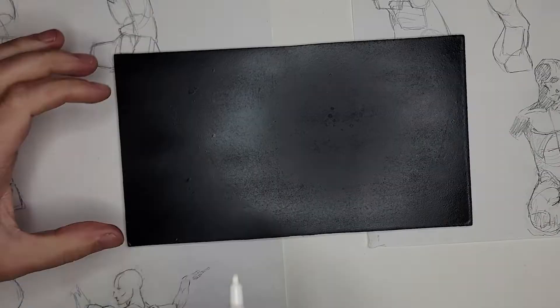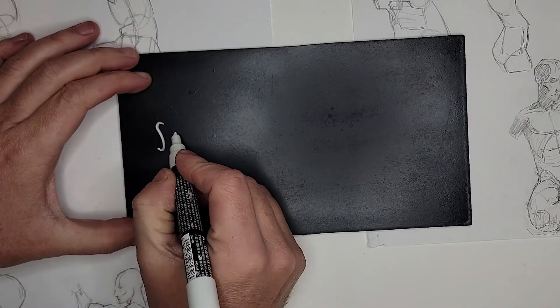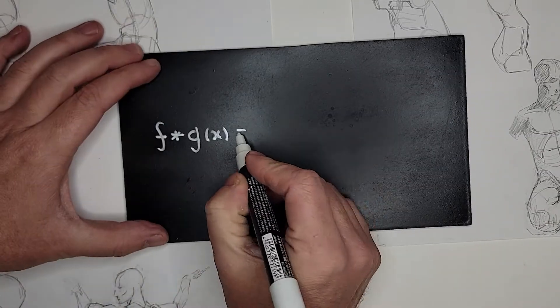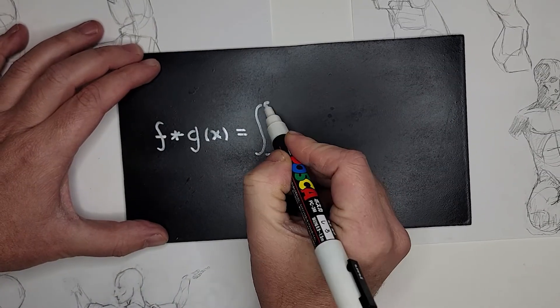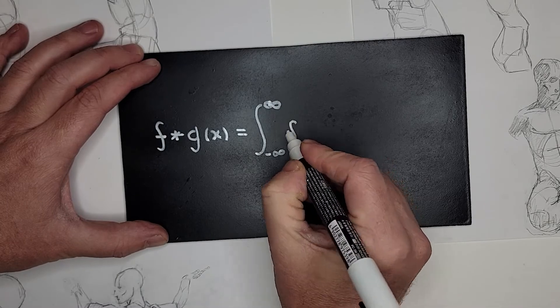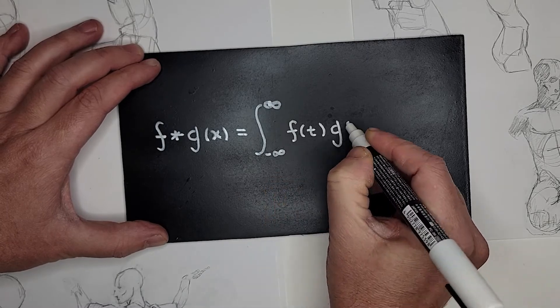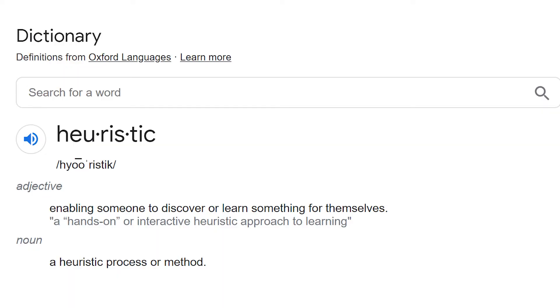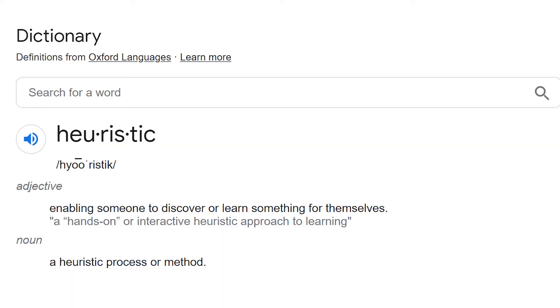I'd like to explain the formula for calculating the convolution, and also go over some simple examples that will hopefully be a heuristic to help you understand the convolution theorem.